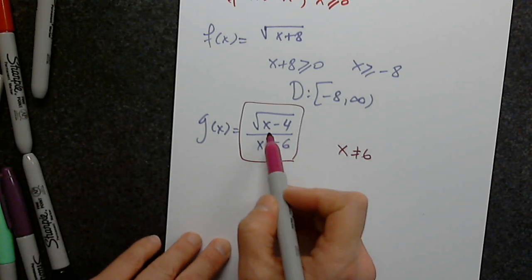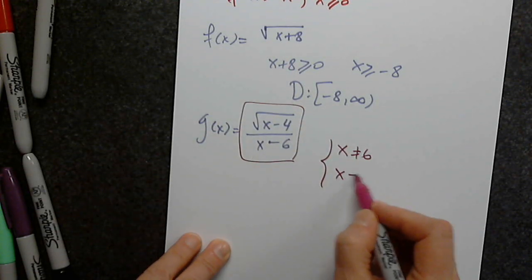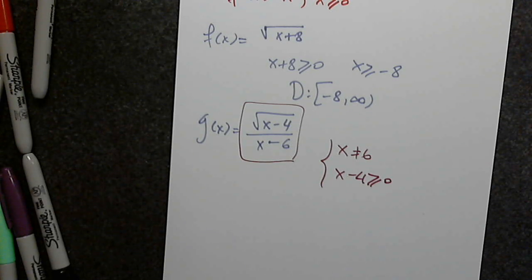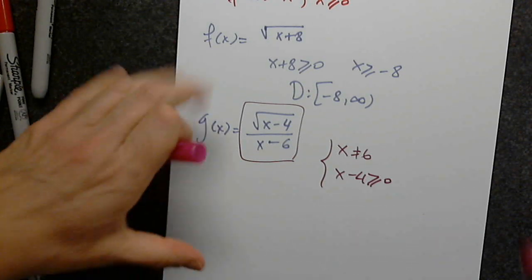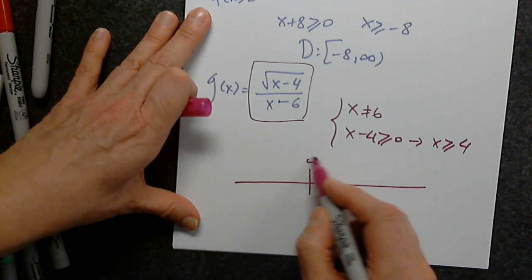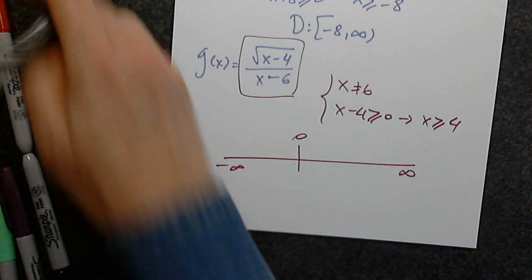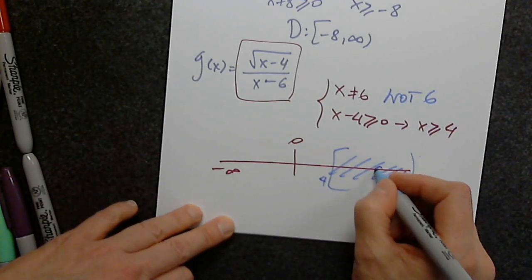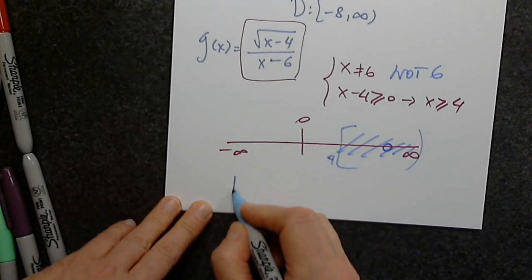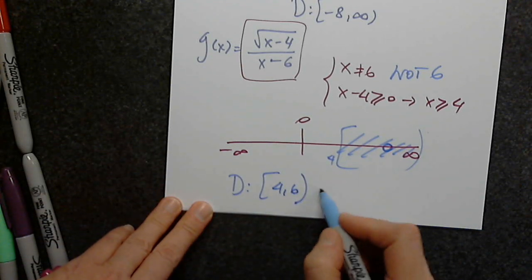I have a square root, so the second condition is x - 4 ≥ 0. If the numerator has a square root, I do have to consider it. This function must fulfill two conditions: make the square root exist, and ensure x ≠ 6. So x ≥ 4 but not 6, giving domain [4, 6) ∪ (6, ∞).